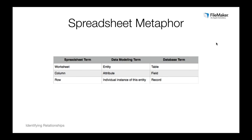How can the spreadsheet metaphor help you identify entities versus attributes? When I started with FileMaker, I came from a world of spreadsheets, so I would ask: is this something that could be a spreadsheet itself, or is this something that would just be a column in a spreadsheet? If my answer was 'this is just a column,' then that's an attribute. But if it could be its own spreadsheet, that's an entity. For example, an order could be its own spreadsheet — a list of all your orders for the past year. But an order date wouldn't make sense as its own spreadsheet — that should be a column inside an existing spreadsheet. Definitely utilize the spreadsheet metaphor to help you think through the difference.